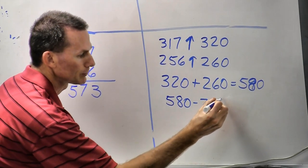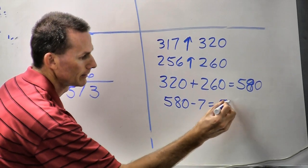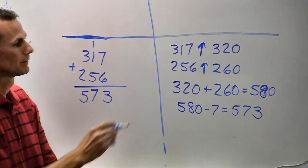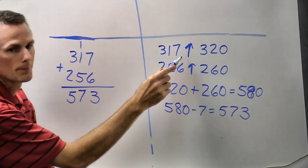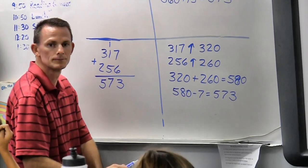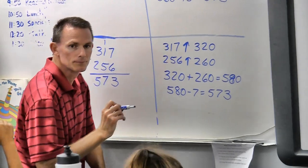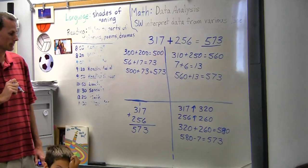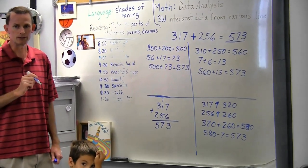And then 580 minus 7 equals 573. And Skyler, how did you know to subtract the 7 at the end here? Since I rounded 317 and 256 up, and each of how much I rounded them up equals 7. And so I had to minus 580 minus 7 equals 573. Great job.